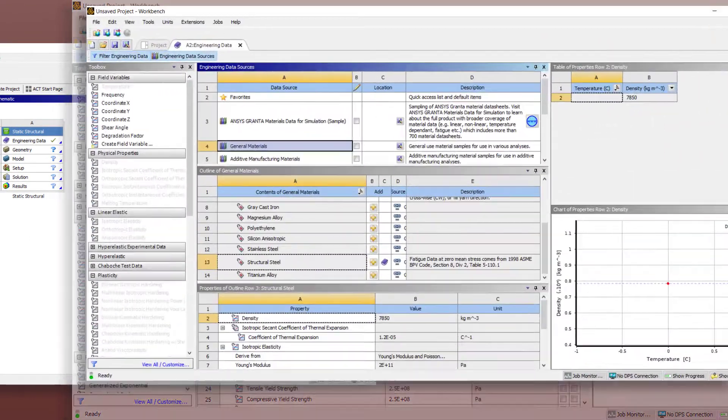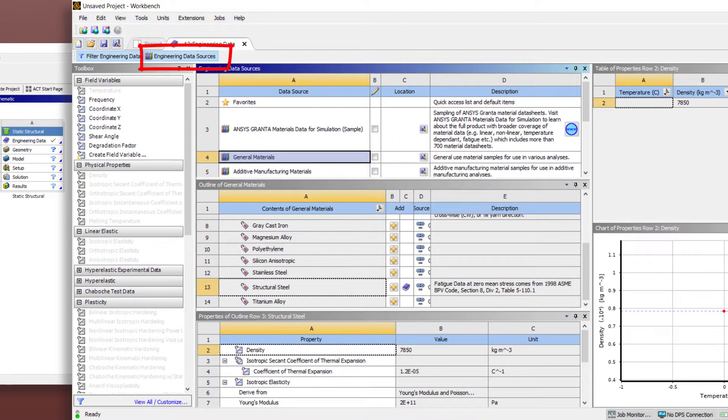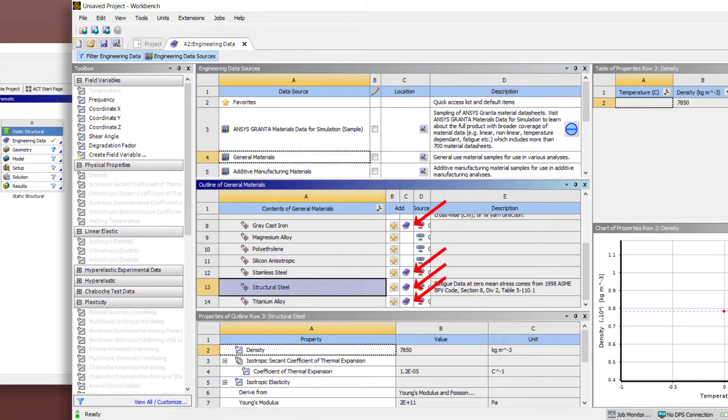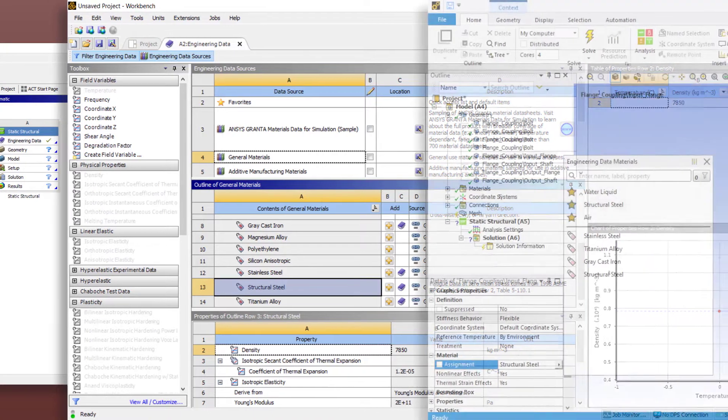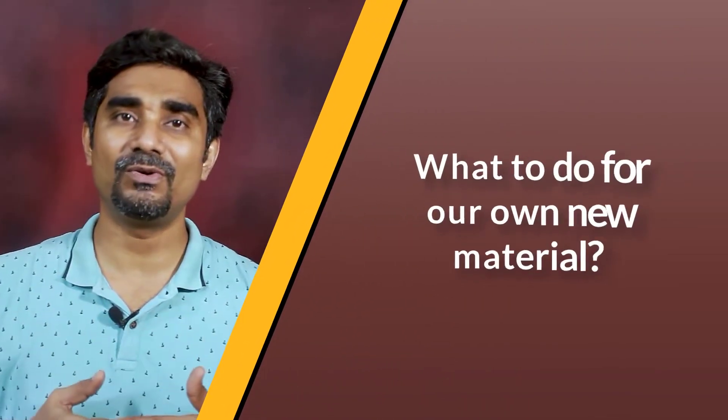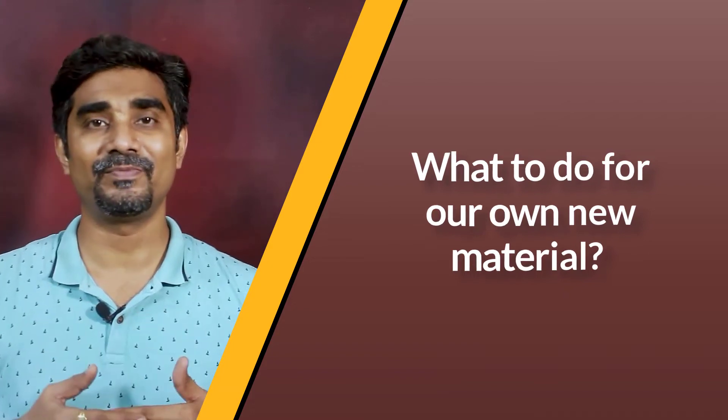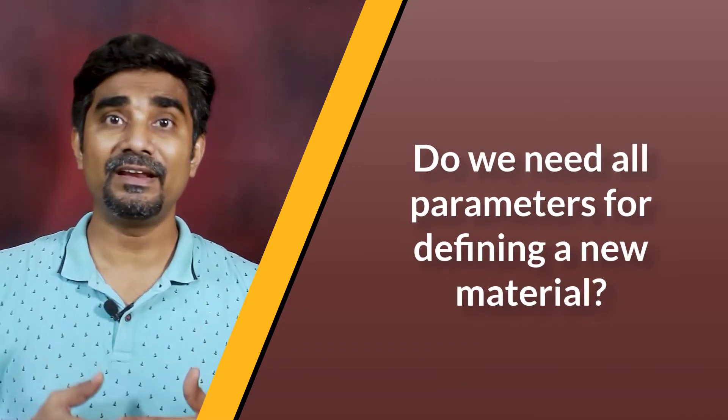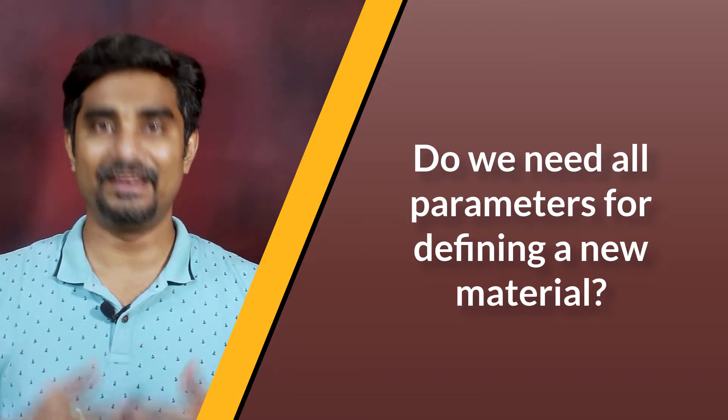Additionally, we can also choose predefined materials from various libraries under the engineering data sources. We can add these materials to the project and then assign them to the appropriate parts in the mechanical interface. But what if we want to create our own material?